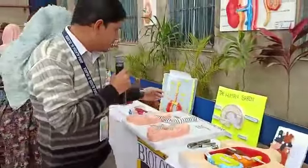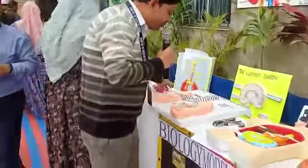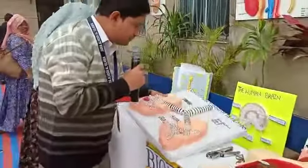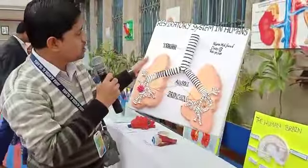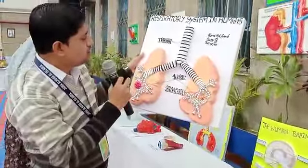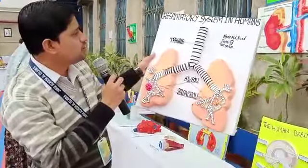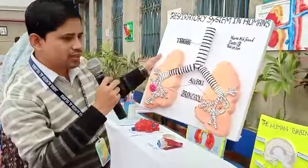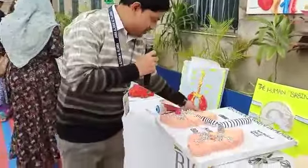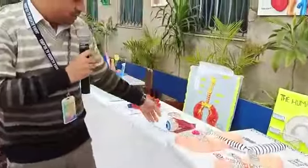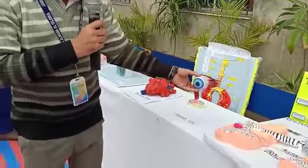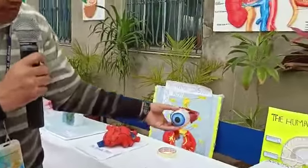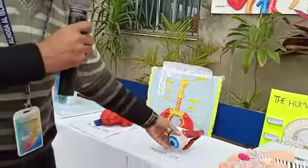This is the model of the respiratory system. The lungs and the airways are formed very beautifully. This is the human eye — you can see the different parts of the human eye.